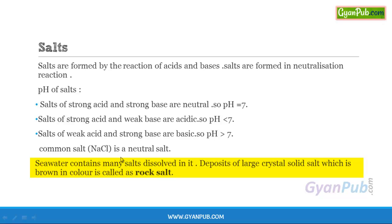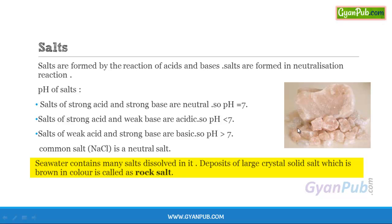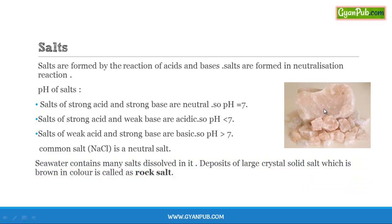Seawater contains many salts and these salts are used in the preparation of common salt. Deposits of large crystal solid salt which are brown in color are called rock salt. Rock salt has a brown color due to impurities present, and it is mined like coal. Here we can see the diagram of rock salt, which is used in the preparation of common salt where impurities are removed, giving a pure common salt with pH approximately equal to 7, useful in food preparations.